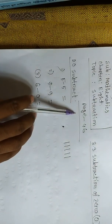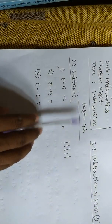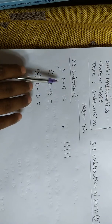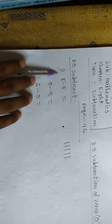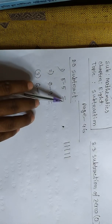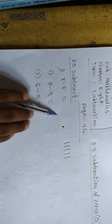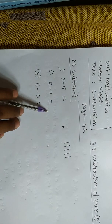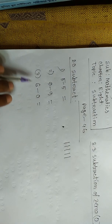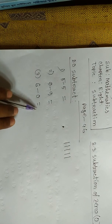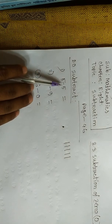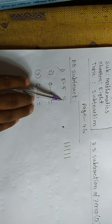Page 46. Do subtraction. Question number 1: 5 minus 5 equals how? 9 minus 9 equals how? 6 minus 0 equals how? Question number 1: 5 minus 5.